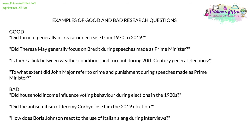Let's look at some good and bad research questions. Good ones include: Did turnout generally increase or decrease from 1970 to 2019? That's a very feasible, reasonable research question. Did Theresa May generally focus on Brexit during her speeches made as Prime Minister? Is there a link between weather conditions and turnout during 20th century general elections? To what extent did John Major refer to crime and punishment during speeches made as Prime Minister? Examples of bad research questions include: Did household income influence voting behaviour during elections in the 1920s? — data for that is unlikely to be available. Did the anti-Semitism of Jeremy Corbyn lose him the 2019 election? — that's an inherently biased question. And how does Boris Johnson react to the use of Italian slang during interviews? — that's a question with questionable relevance.